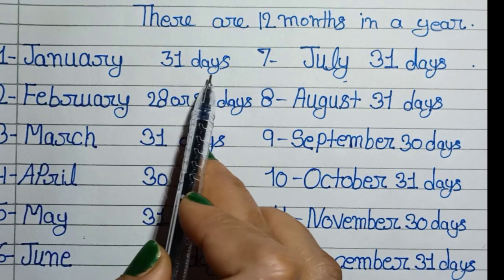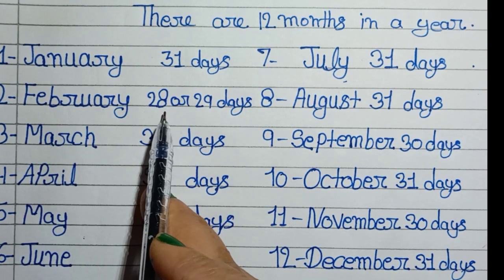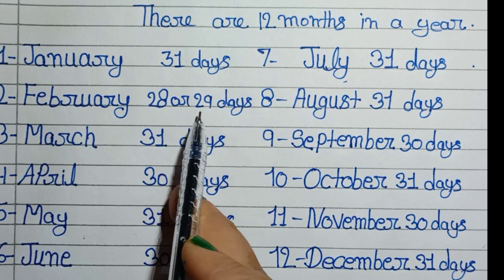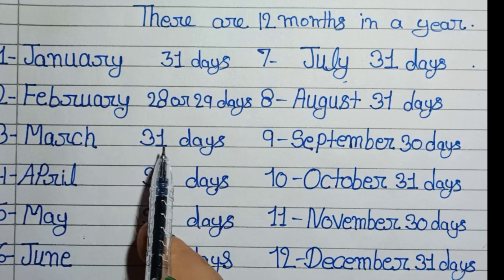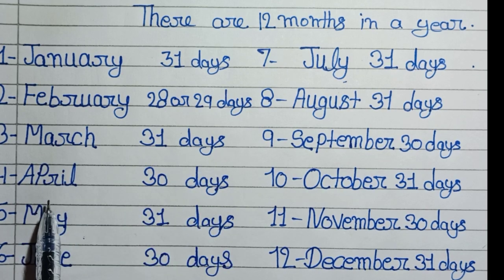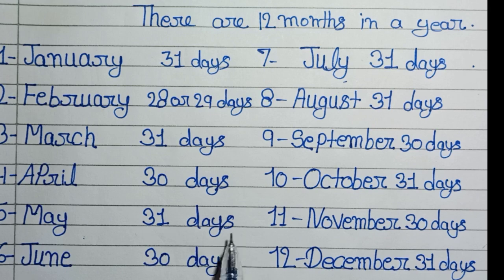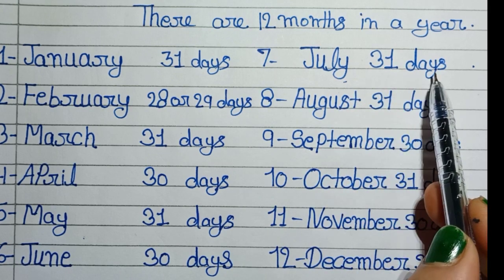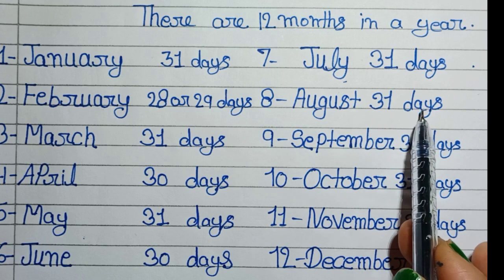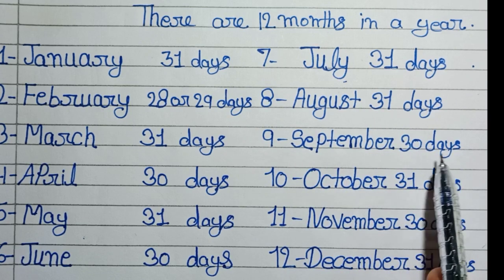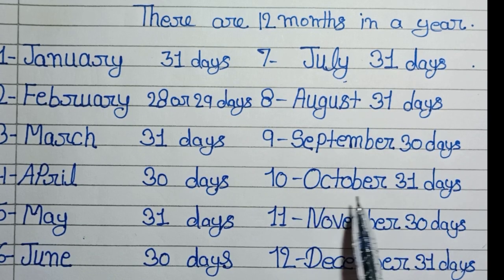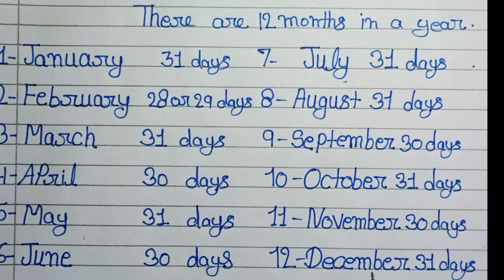January, 31 days. February, 28 days. March, 31 days. April, 30 days. May, 31 days. June, 30 days. July, 31 days. August, 31 days. September, 30 days. October, 31 days. November, 30 days. December, 31 days.